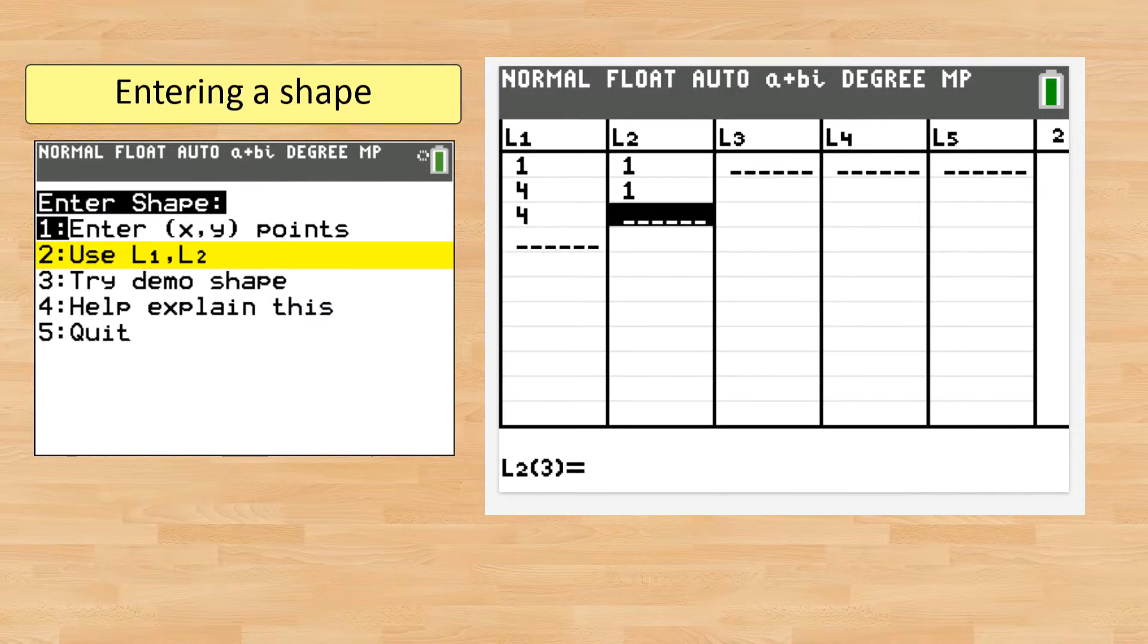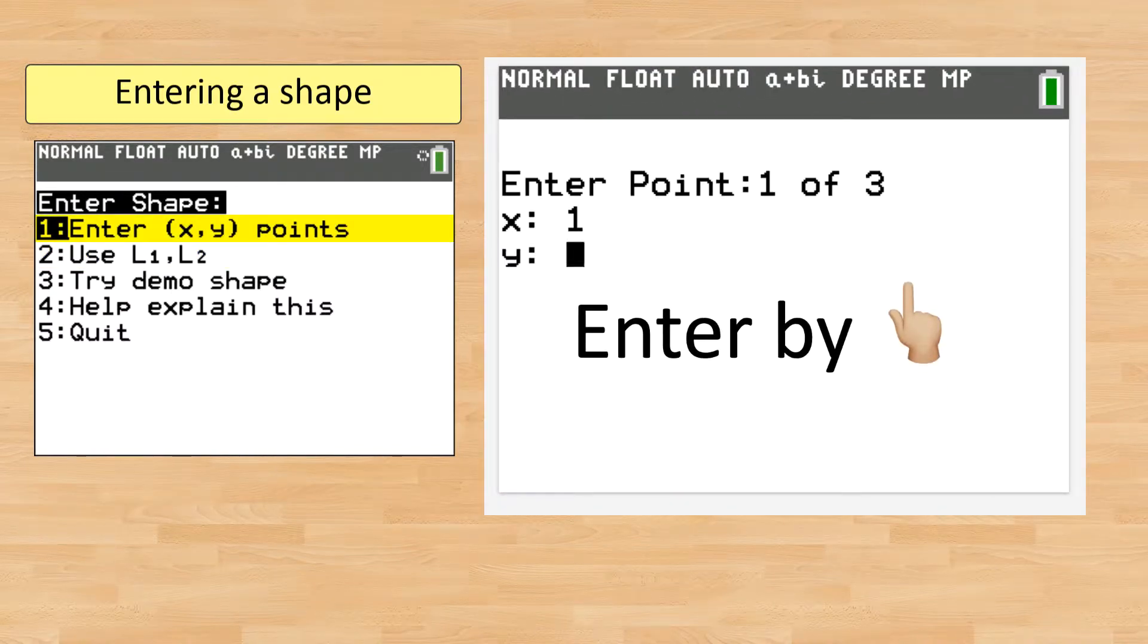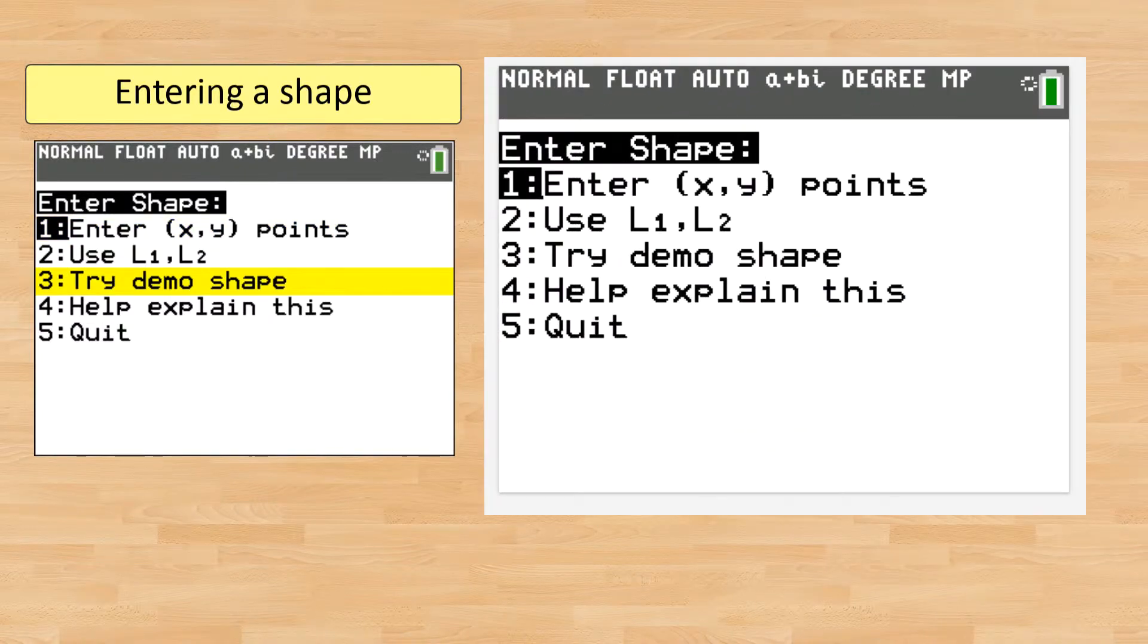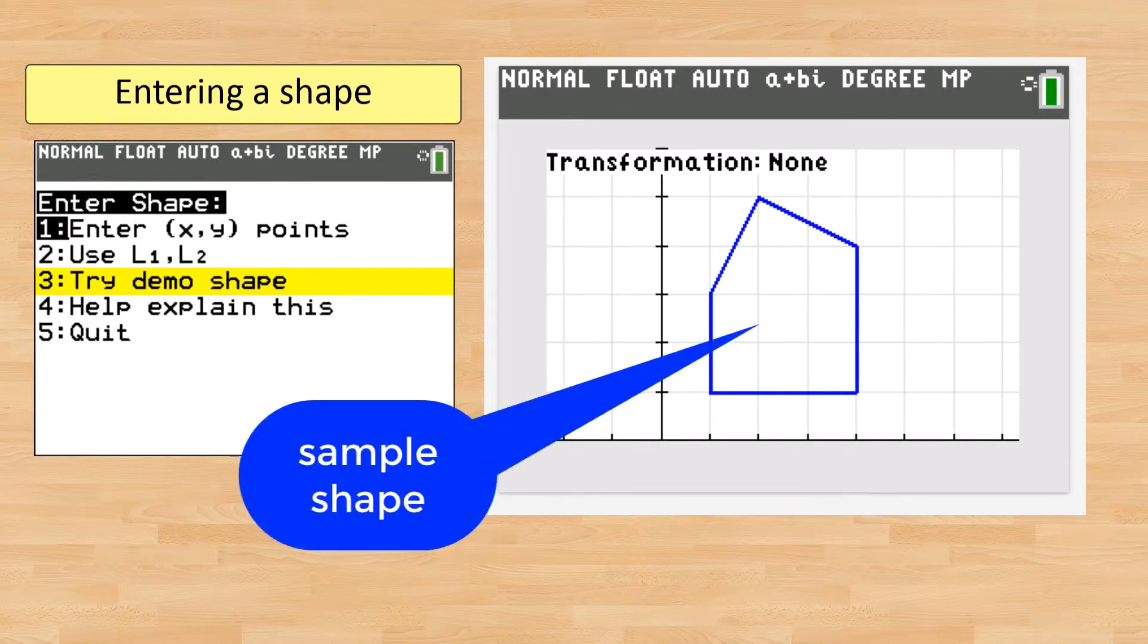You can enter them as XY coordinates using the built-in lists, enter them by hand, or try things out with a preloaded shape, which is an irregular pentagon.